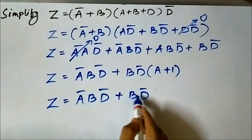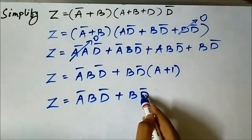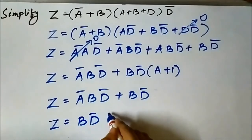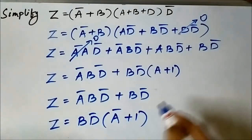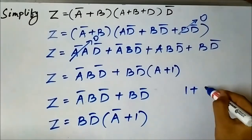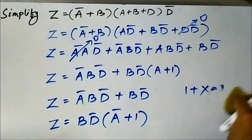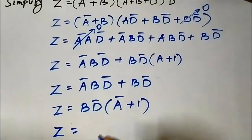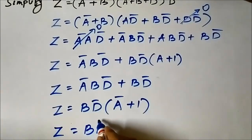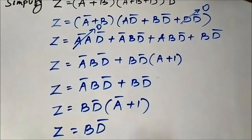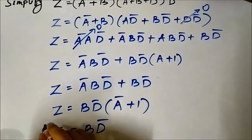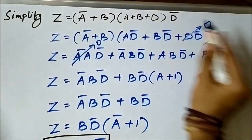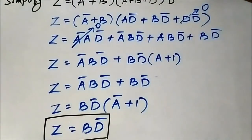Now b·d̄ is common in both remaining terms: ā·b·d̄ and b·d̄. Taking b·d̄ common gives b·d̄·(ā + 1). Again, ā + 1 = 1, so z = b·d̄·1 = b·d̄. This is the final simplified Boolean expression — the original expression simplifies to z = b·d̄.